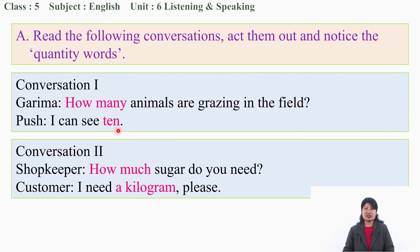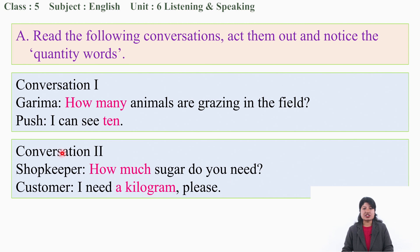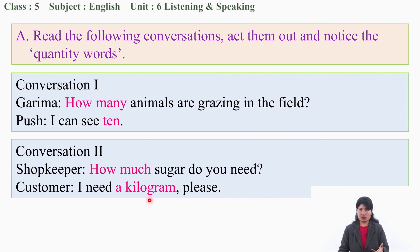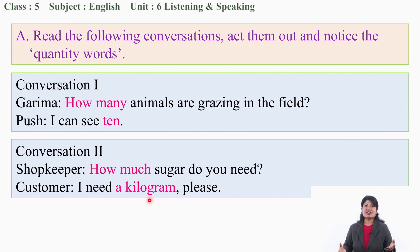The answer is: 'I can see 10 - 1, 2, 3, 4, 5, 6, 7, 8, 9, and 10. I can see 10 animals.' Conversation two - shopkeeper and customer: 'How much sugar do you need?' When we go to the shop, the shopkeeper may ask us 'how much sugar.' They ask how much or how many things we need. The customer replies: 'I need a kilogram, please.' We need to know in which amount - kilo or litre - we ask for things.